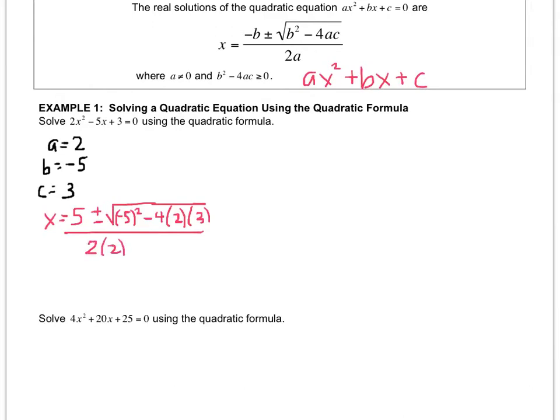Now it's just a question of order of operations. x equals 5 plus or minus the square root... -5 squared is 25, minus, that's 24, all divided by 4. Let's continue: x equals 5 plus or minus the square root of 1 over 4.